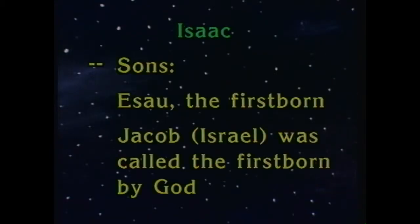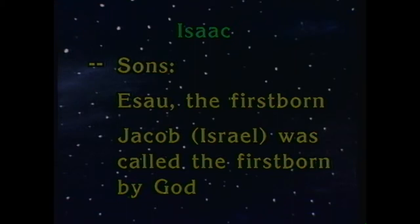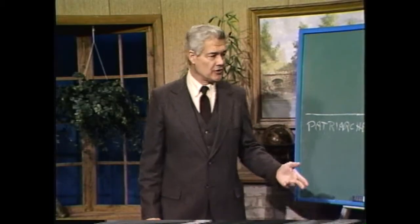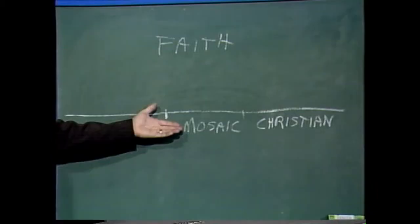Now, Isaac had two sons. Their names were Jacob and Esau. Literally speaking, Esau was the firstborn, but in Exodus 4:22, the scriptures called Jacob the firstborn. His name was changed to Israel. The Lord said, 'Have I not chosen Israel, my firstborn?' There are transcendent principles which are greater than law.